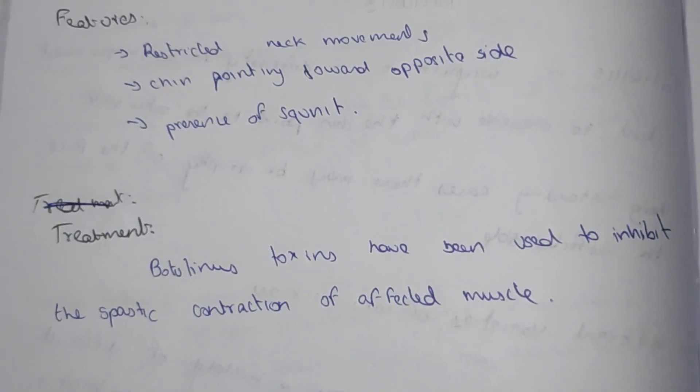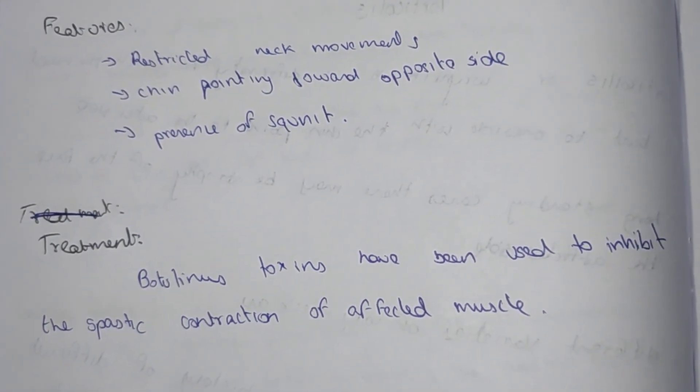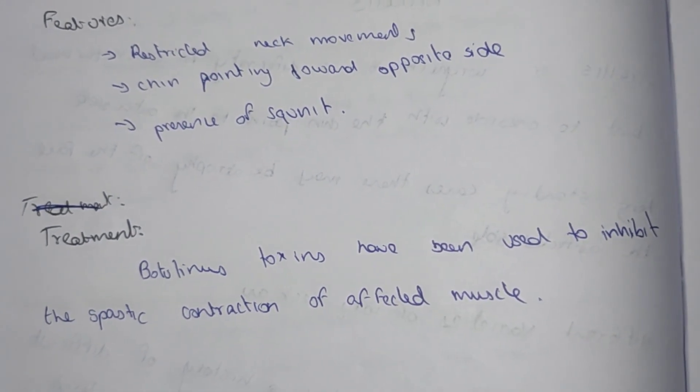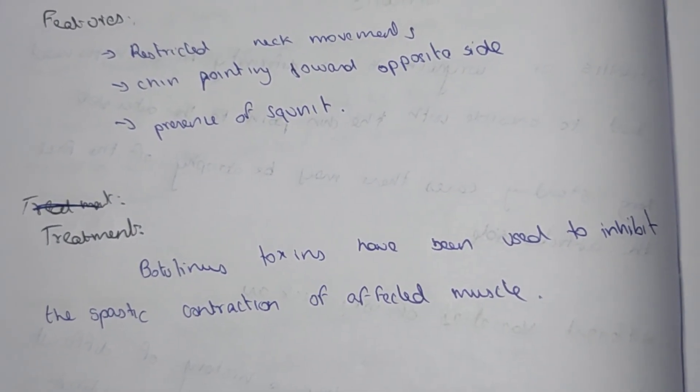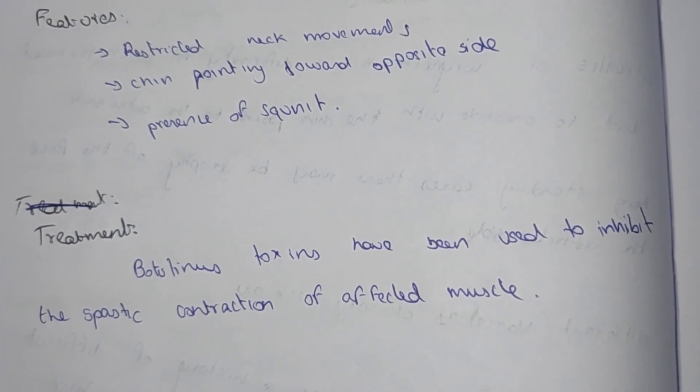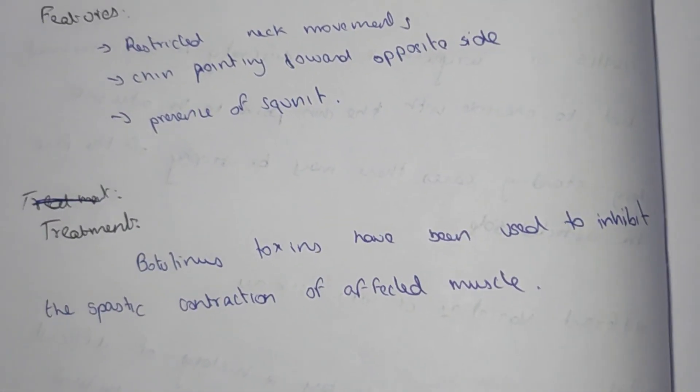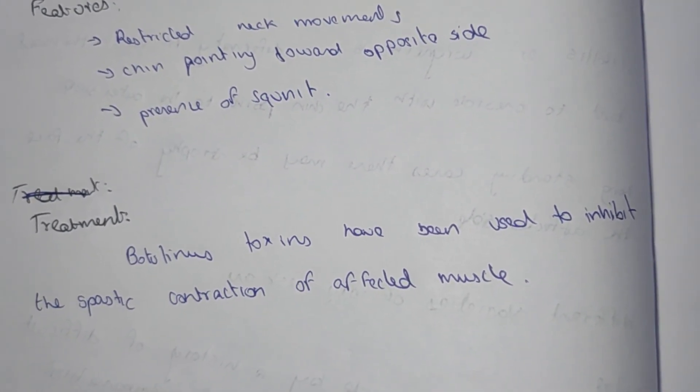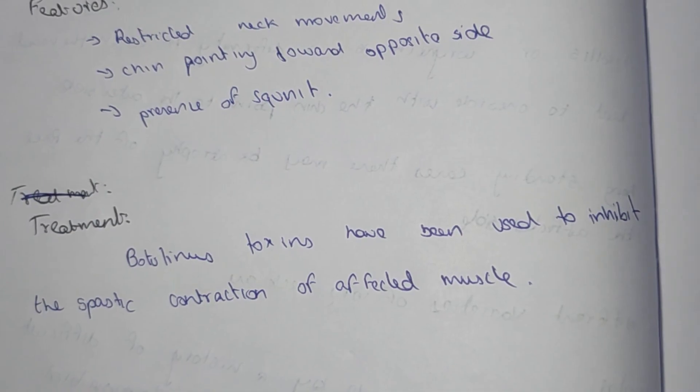Features include restricted neck movement to one side, with the opposite side affected. Chin positioning towards the opposite side. There may be presence of squint involving the extraocular muscles.